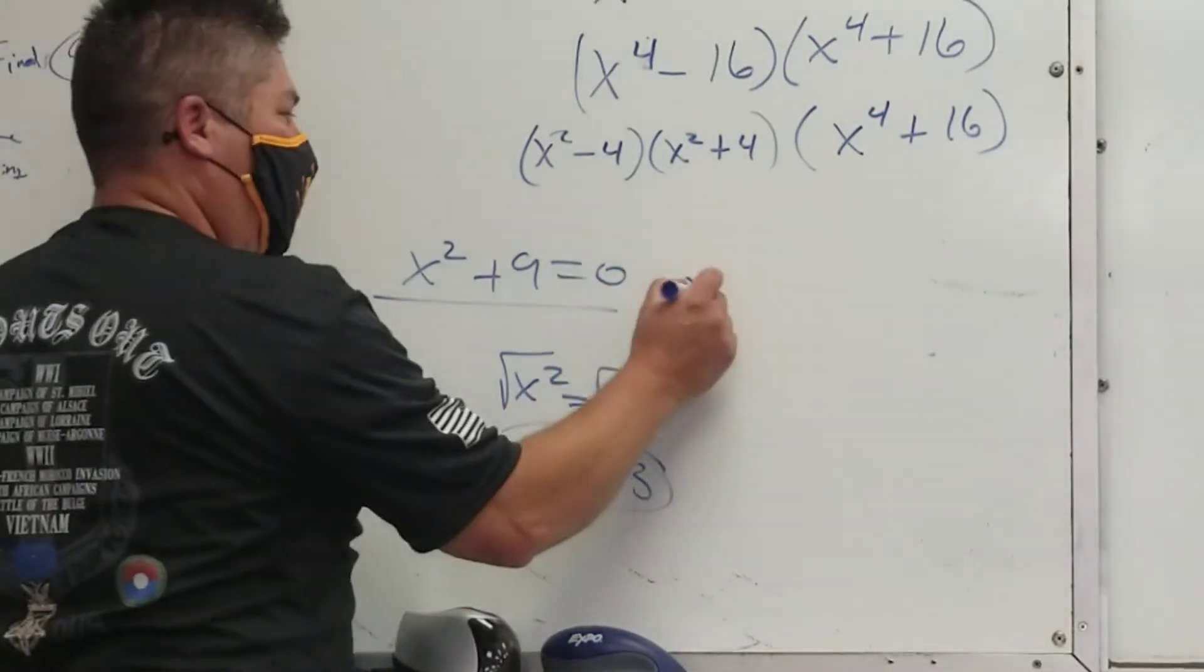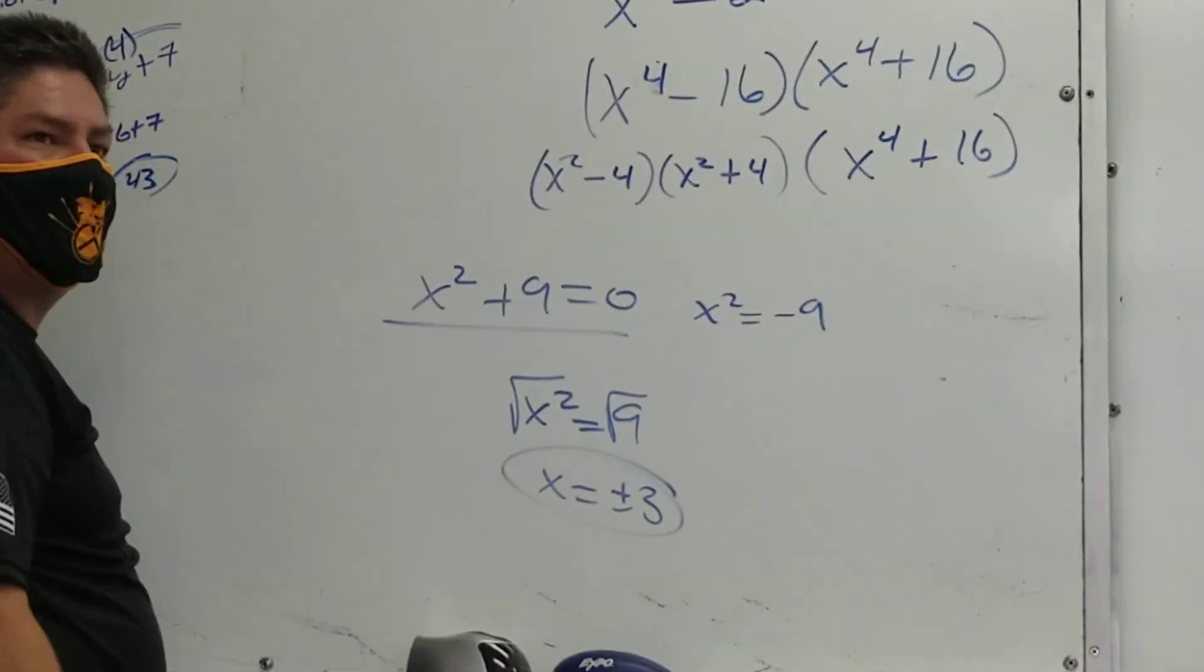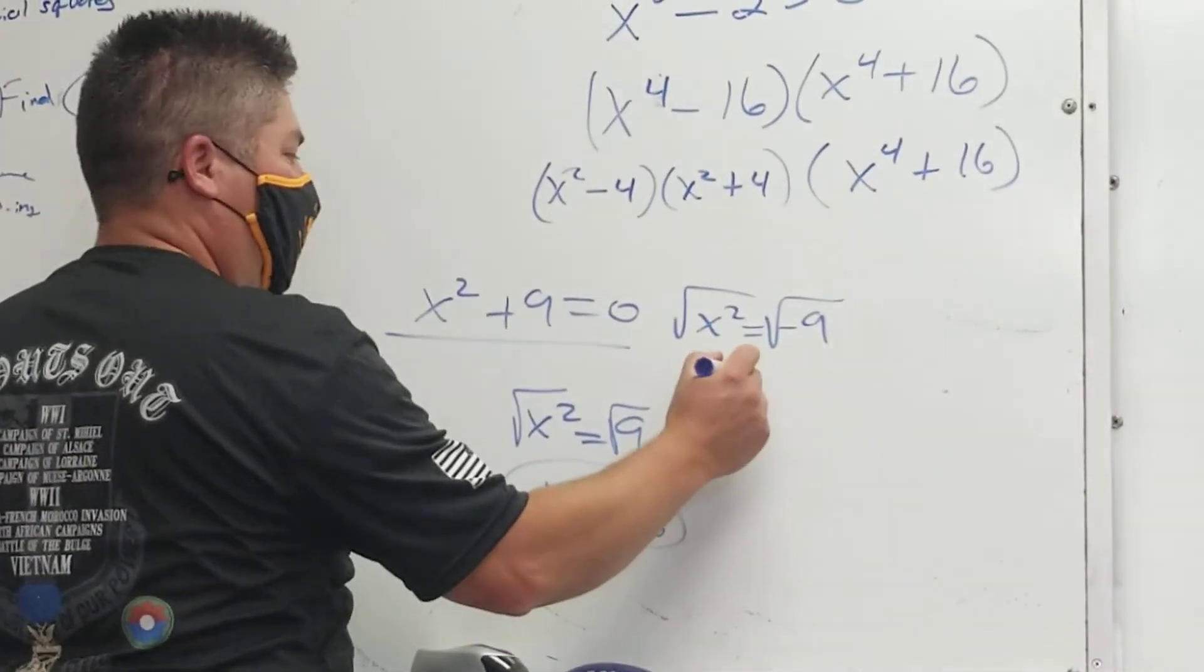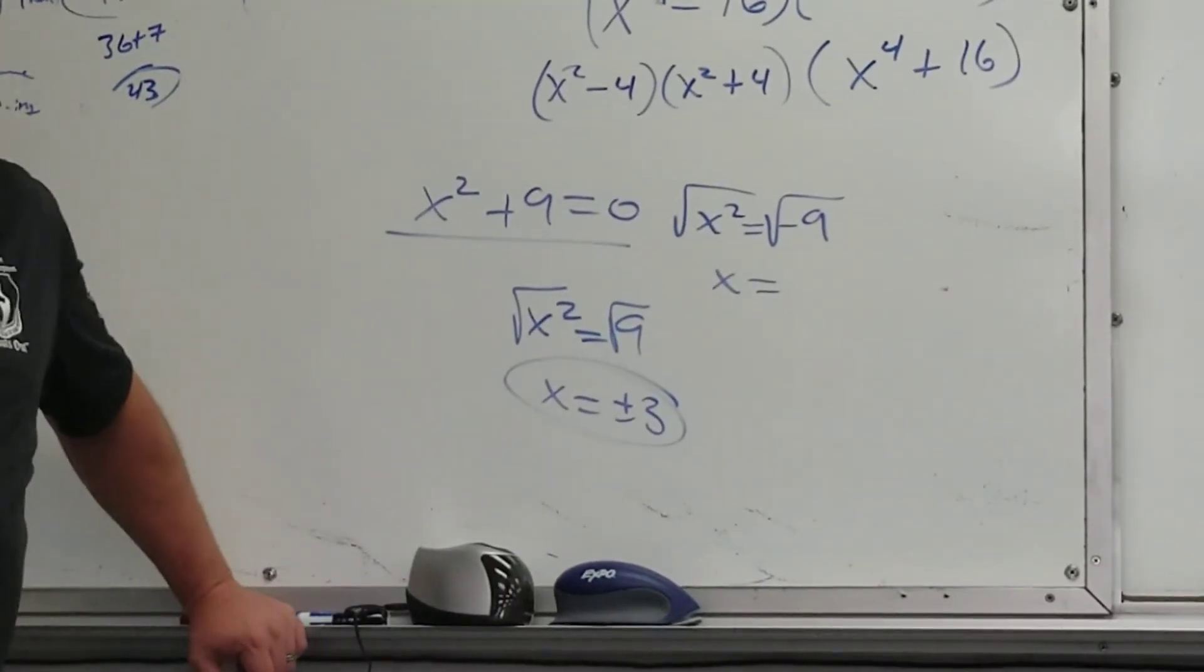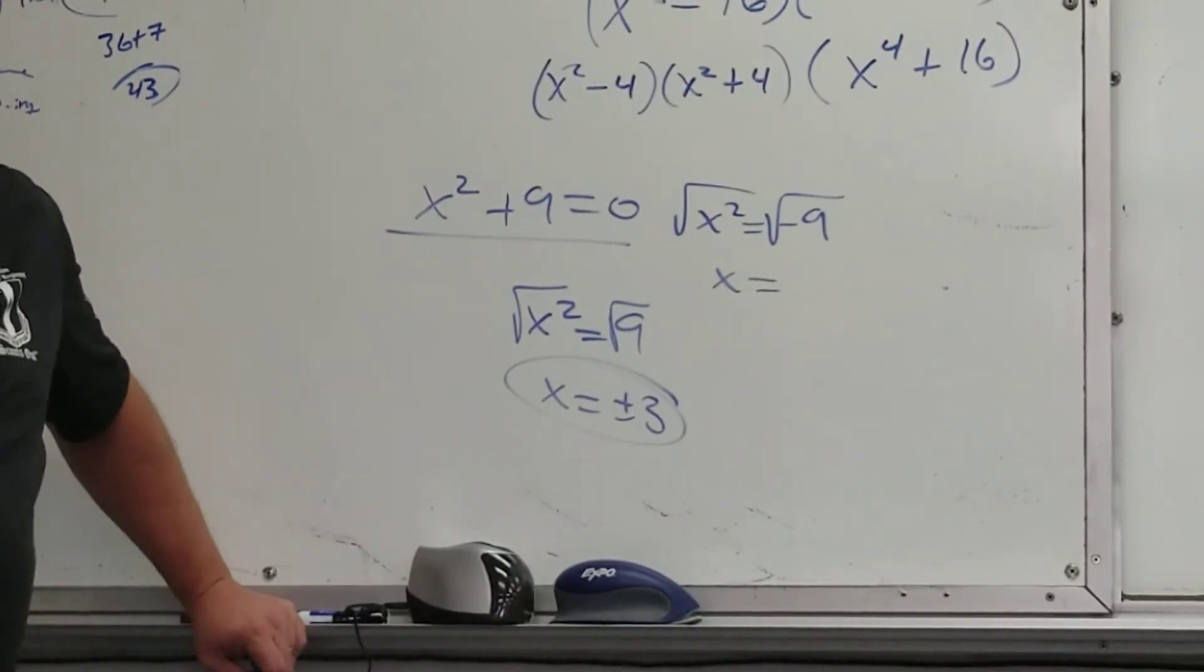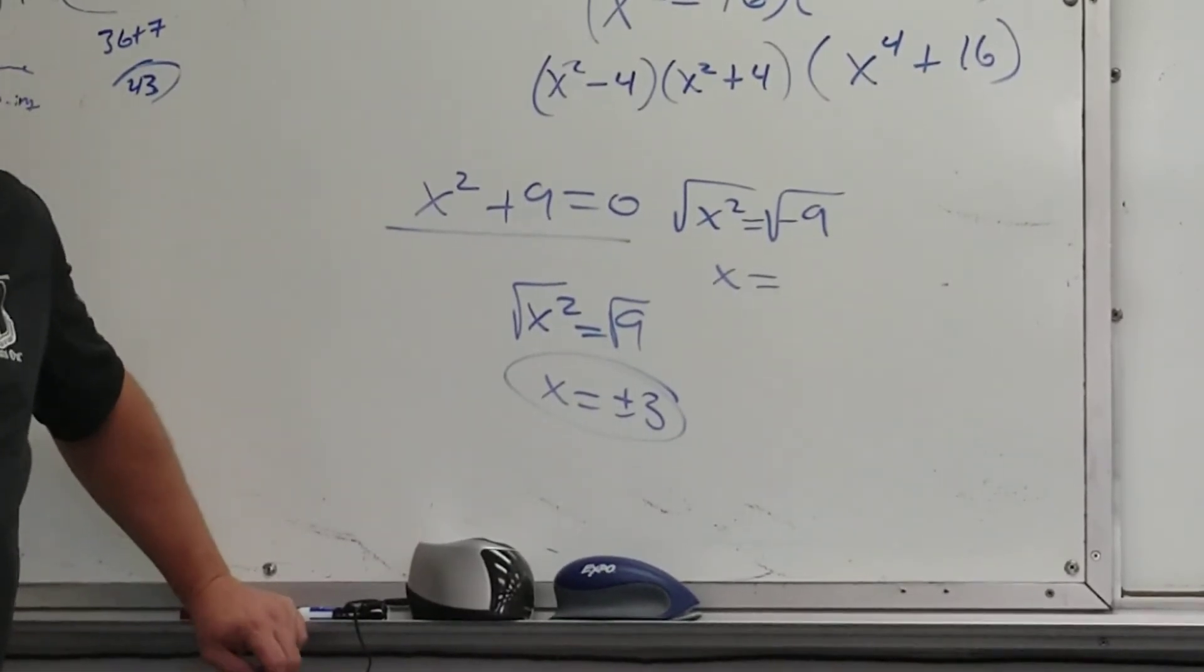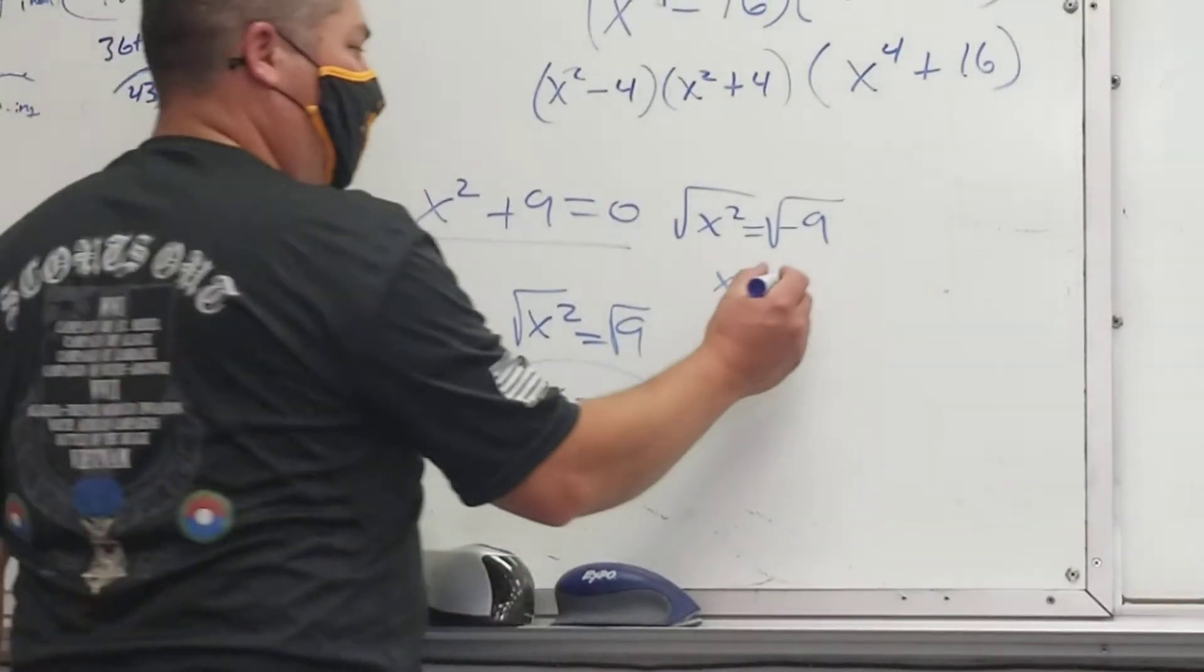Square root of both sides, right? What's the problem? Square root of a negative 9. What is it? Give me two numbers that multiply to be negative 9 that are exactly the same. Negative 3 times negative 3 is positive 9. There isn't one.